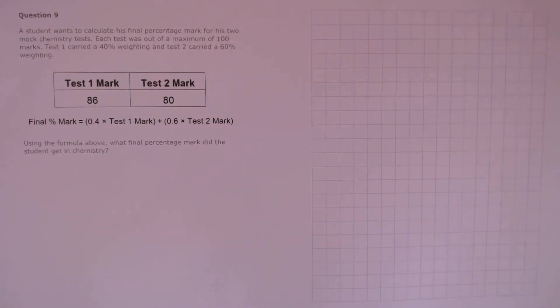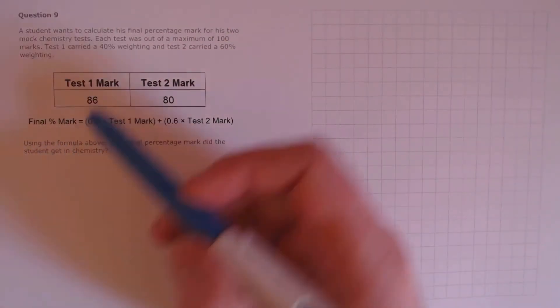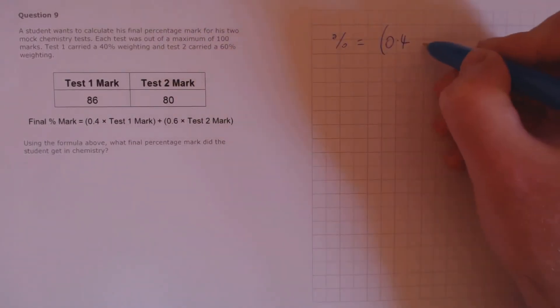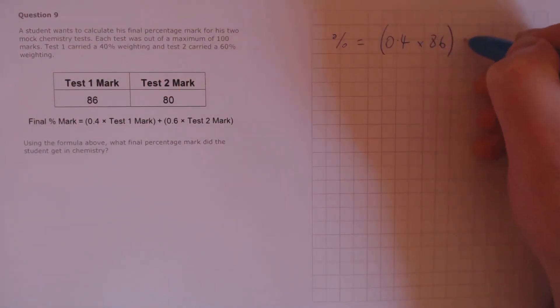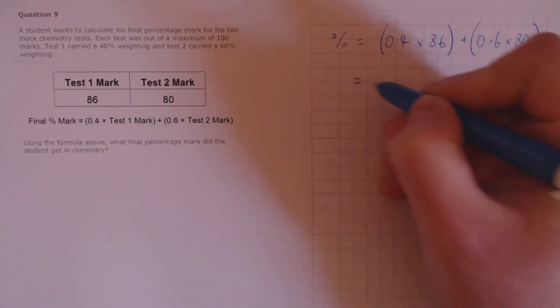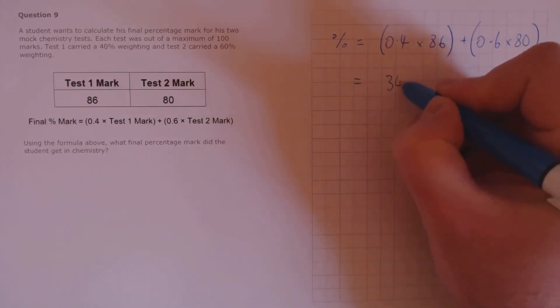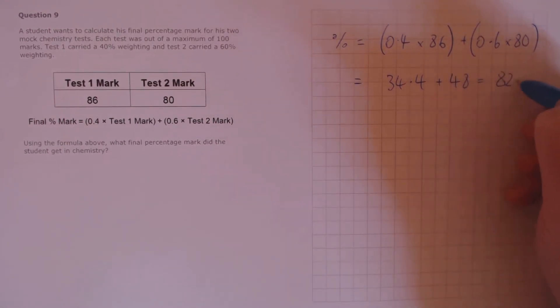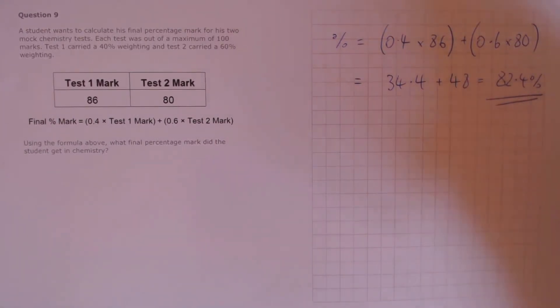Question 9. A student wants to calculate his final percentage mark for his two mock chemistry tests. Each test was out of a maximum of 100 marks. Test 1 carried a 40% weighting and test 2 carried a 60% weighting. Using the formula above, what final percentage mark did the student get in chemistry? We substitute the marks into the formula: 0.4 multiplied by the test 1 mark of 86, plus 0.6 multiplied by the test 2 mark of 80. 0.4 times 86 is 34.4, plus 0.6 times 80 is 48, giving a final percentage grade of 82.4%.